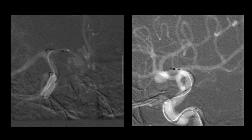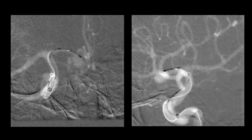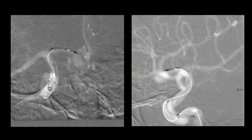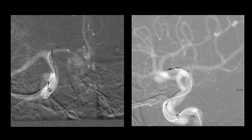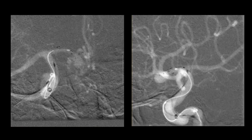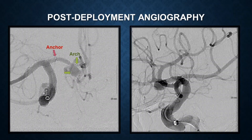The device is then deployed from the distal A1 segment toward the aneurysm, with close attention paid to both the AP and lateral projections to assure accurate positioning. The angiogram shows the anchor in the A1, which provides the wall-out position and stability for the device. The arch is seen here protecting the aneurysm neck from the parent vessels.